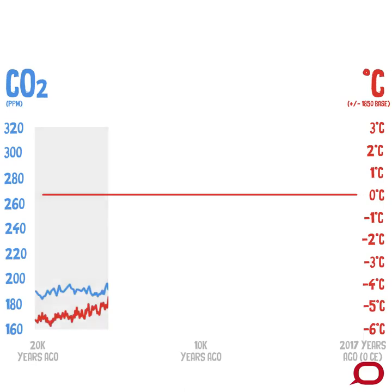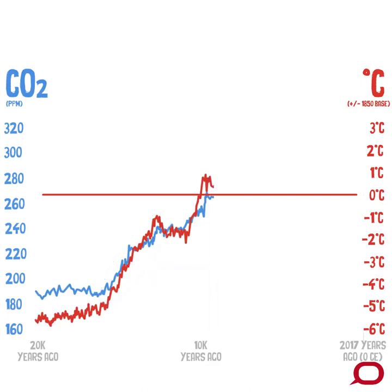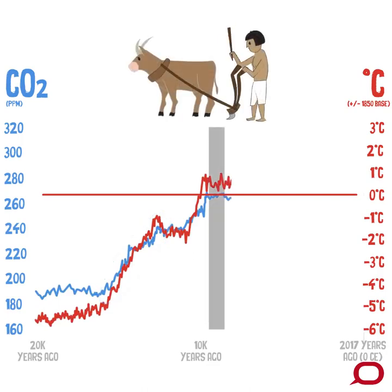From that low, cold point, the CO2 rises naturally by as much as 35 parts per million each 1,000 years, stabilising to near-modern levels at around 10,000 years ago. Oh look, there's the birth of modern agriculture.